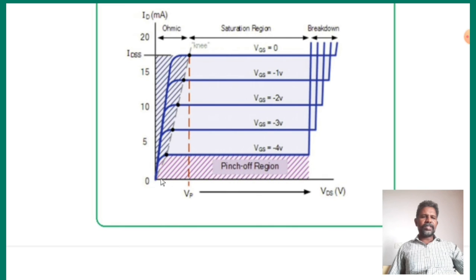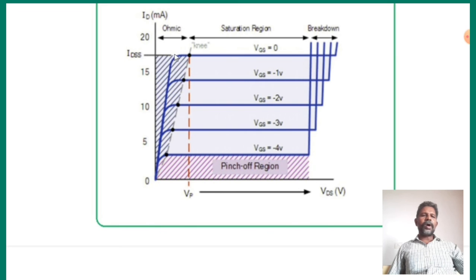If we increase the VDS to zero, current will flow at a small value. You can see this as a pinch-off voltage at a small current in the corner. If we increase the current rate at constant VDS, the current rate will flow at a small current. So this diagram shows four regions: ohmic region, saturation region, breakdown region, and pinch-off region.